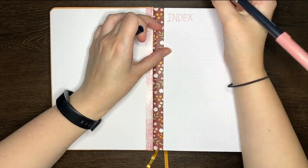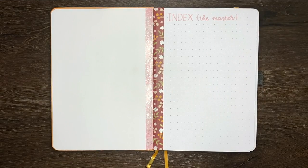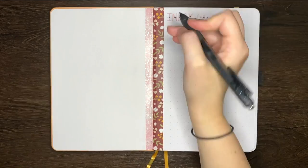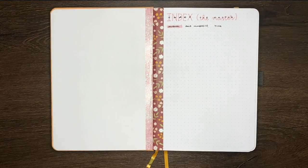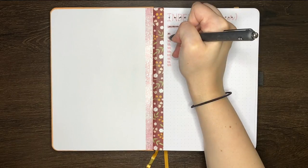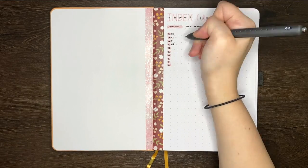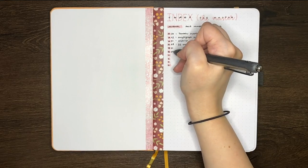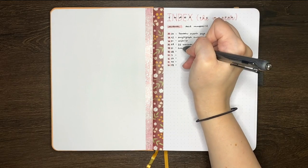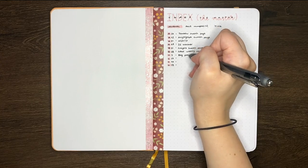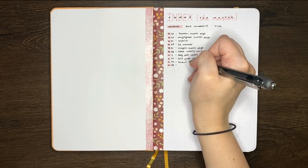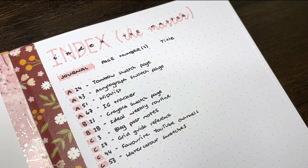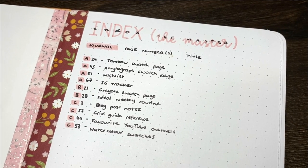If you have collections stored in previous notebooks, collections that you may still want to refer to or work on, then what can be useful to have is a master index. This is an index that allows you to easily find pages across multiple notebooks. In setting up a master index, you of course need the page numbers of the collections that you're indexing, but you also need a way to refer to which notebook they're in. This could be something like numbering your journals, so journals 1, 2, and 3. You could assign letters to each of your journals, so A, B, and C. Or you could name your journals. Then, in putting those entries into your master index, you just need to write down the number, letter, or name of the journal, along with the page number that the relevant collection is found on.